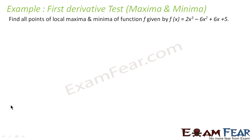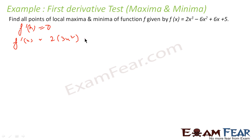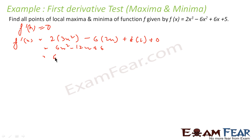Let's take one more example. Here also we have to find the maximum and minimum value. Since it is a continuous function there are no non-differentiable points, so critical points are only where f'(x) = 0. f'(x) = 6x² - 12x + 6 = 6(x² - 2x + 1) = 6(x - 1)². Setting this equal to 0, we get x = 1 as the only critical point.